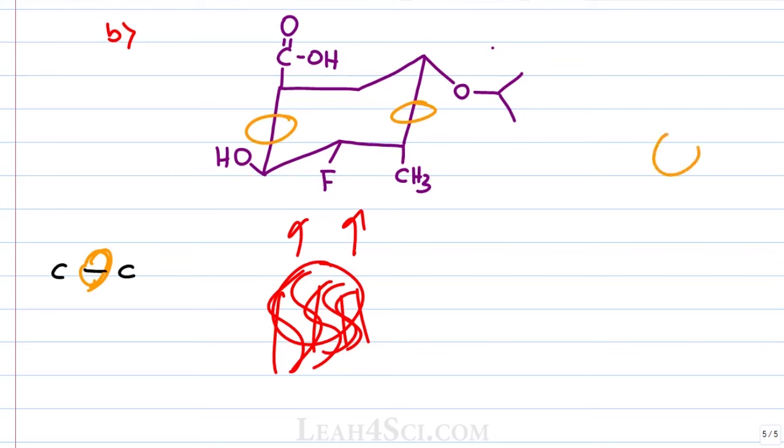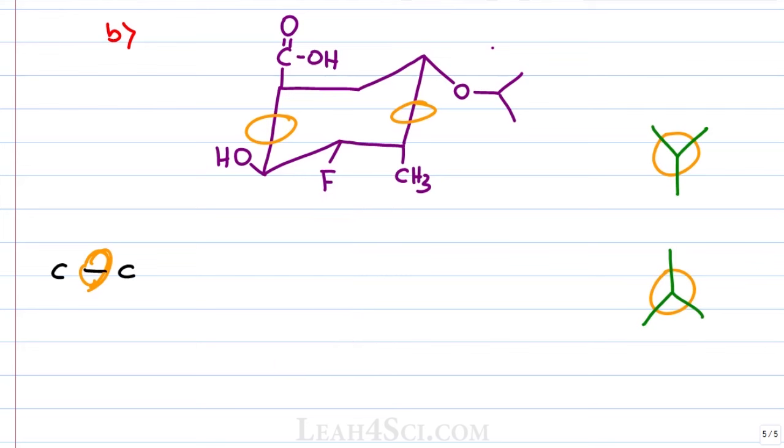With a standard Newman projection, you see three bonds coming out of the front of the Newman and three bonds behind it. They can be written as a Y or an upside down Y. When going from a chair to a Newman, instead of picking which one, let the chair show you by first adding in all the invisible hydrogen atoms on the right and left carbons of the chair.